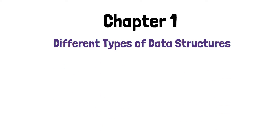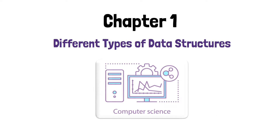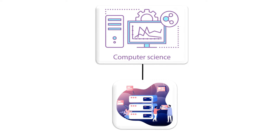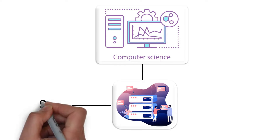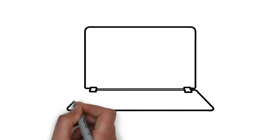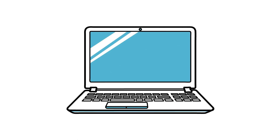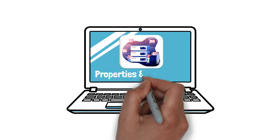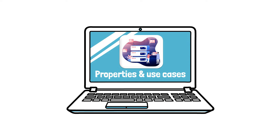Chapter 1: Different Types of Data Structures. In computer science, there are several types of data structures that are used to store and organize data. In this video, we'll be discussing the most common types of data structures and exploring their properties and use cases.